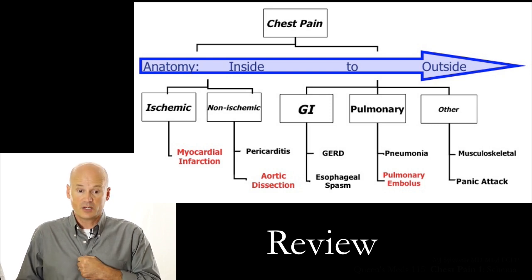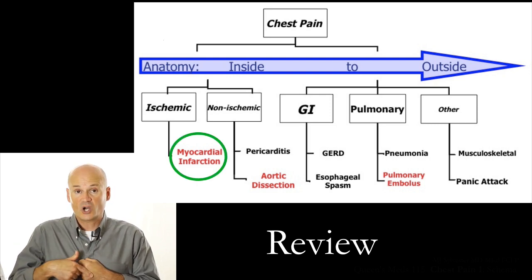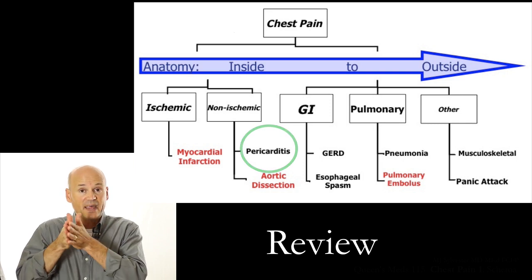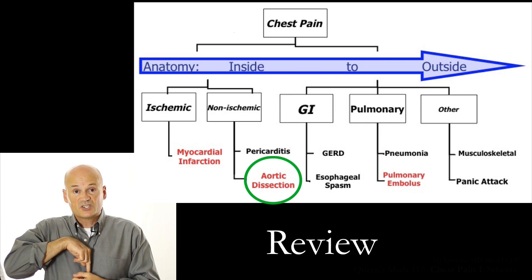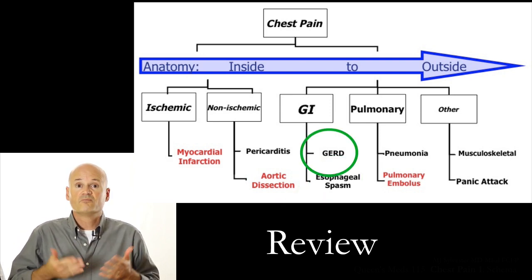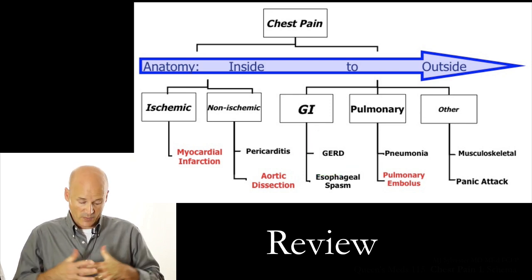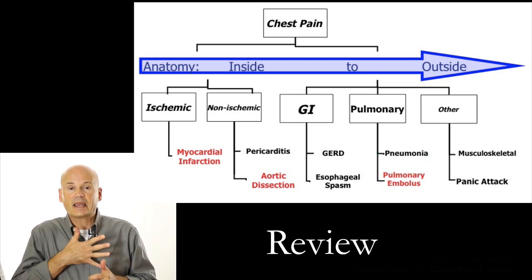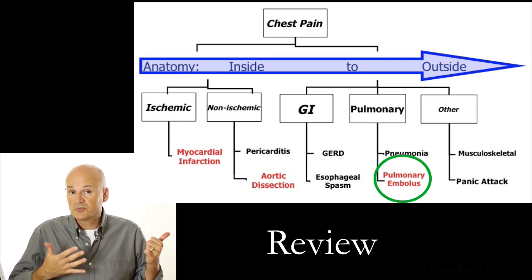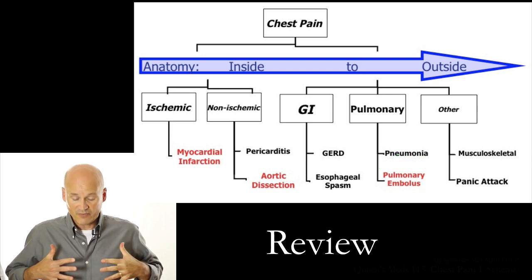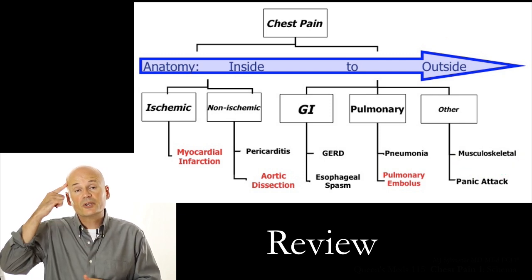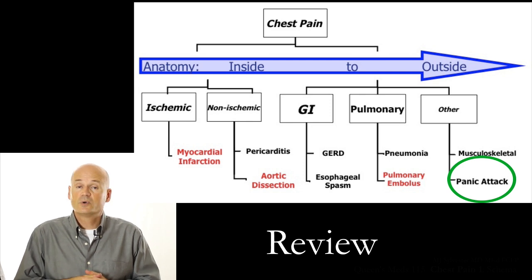Let's review. Starting deep with the heart and the coronary arteries that get plugged: myocardial infarction. The pericardium getting inflamed: pericarditis. The aorta's lining getting split open and dissected: aortic dissection. The esophagus, either going into spasm or getting backwash from the stomach: esophageal spasm and GERD. Then the lungs — either infected, causing pneumonia, or a clot traveling up from the leg into the heart and pumped out, either causing no symptoms, some chest pain, or sudden death: pulmonary embolus. Then the chest wall muscles, bones, and joints: musculoskeletal pain. And last, the anxiety disorder triggered in the brain: panic attack, commonly associated with chest pain.